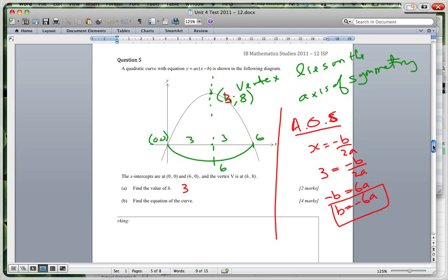And then I can take any other point. I'm going to take this point over here, the 6 and 0, and I'm going to put it into this equation. I'm going to have another equation. So I'm going to have Y, which is 0. So 0 equals A times X. Now X is 6, so A times 6, and you're going to get 6 minus B. So if I multiply this out, I'm going to get 36A minus 6AB. And then from that I can substitute my B into this equation. That's all equal to 0.